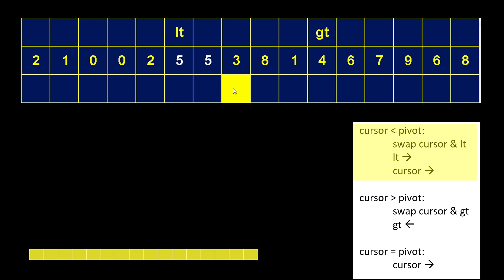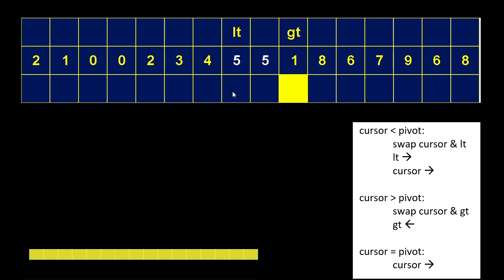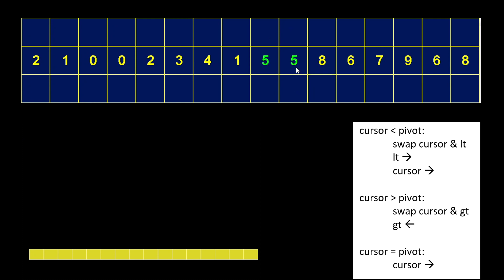Now we're smaller than the pivot, so swap the cursor and LT, LT to the right, cursor to the right. We're just going to keep on going. Now we see that the cursor and GT are starting to cross over. We're not quite done yet — this one is on the wrong side, so we're in rule one and we're going to take care of that. And now we've crossed over. Since we're done, we know that these fives are complete — they are in their final resting spot. Everything to the left of the fives is smaller, and everything to the right of the fives is greater.